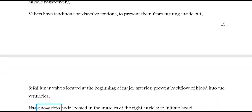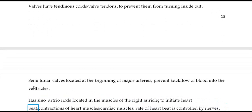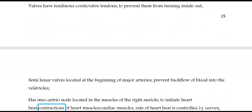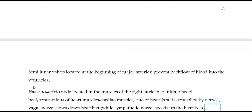The heart has a sino-atrial node located in the muscles of the right auricle to initiate heartbeat and contractions of the cardiac muscles. The rate of heartbeat is controlled by nerves: the vagus nerve slows down the heartbeat, while the sympathetic nerve speeds it up.